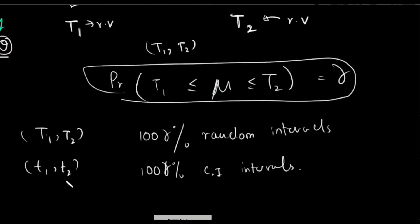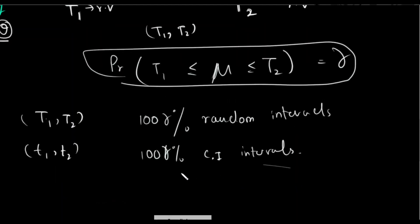If the values q1 and q2 are given, then T1 and T2 define the 100-gamma percent confidence interval for theta. We can use T1 and T2 as the random interval bounds giving the gamma percentage confidence interval.